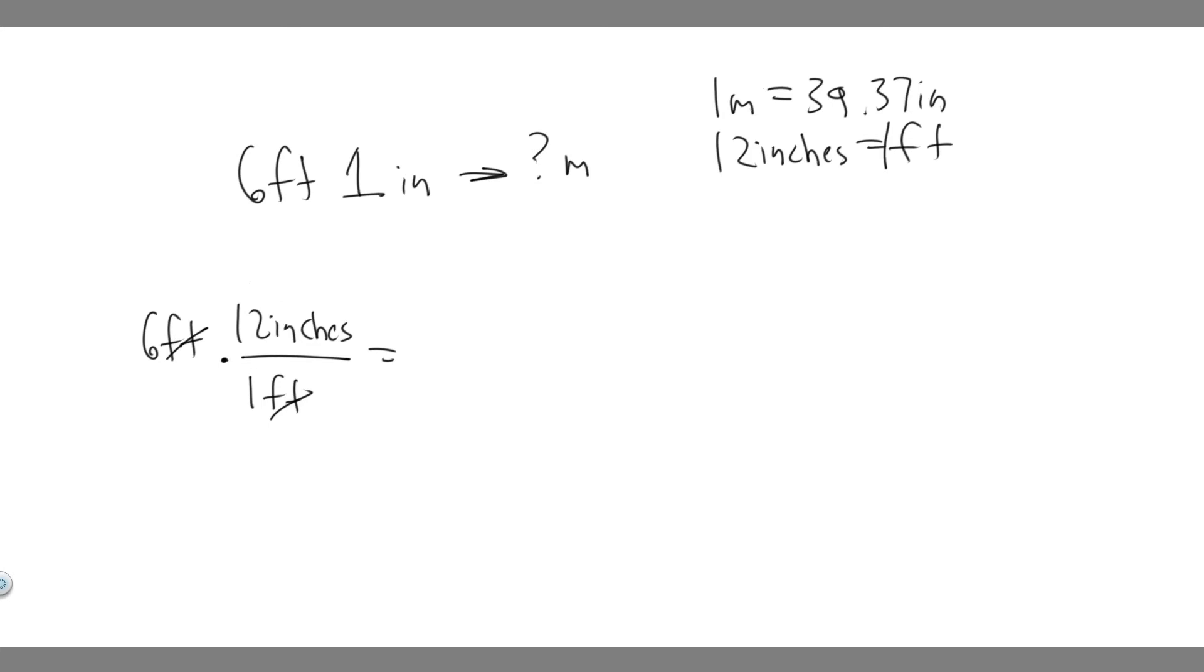So 6 times 12 is just going to be 72. So it's going to be 72 inches. So we know there's 72 inches in 6 foot, but this is 6 foot 1. So we have to add the 1 inch. So if we add 1, it's going to be equal to 73 inches.